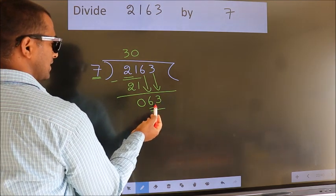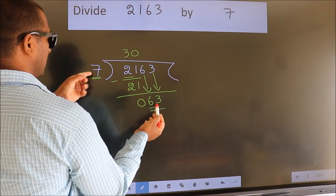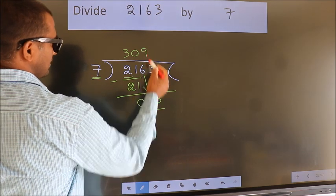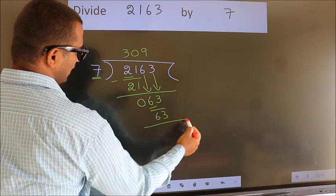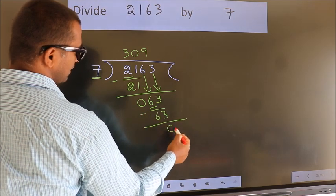When do we get 63? In the 7 table. 7 nines, 63. Now, we subtract. We get 0.